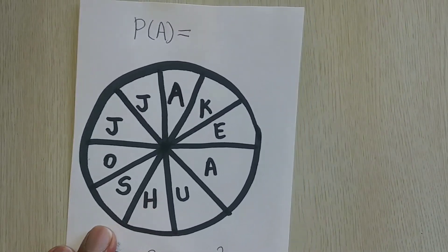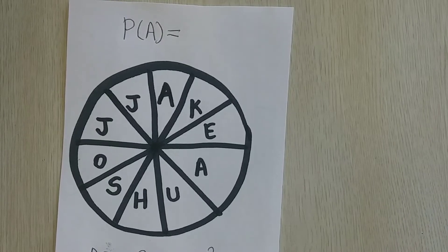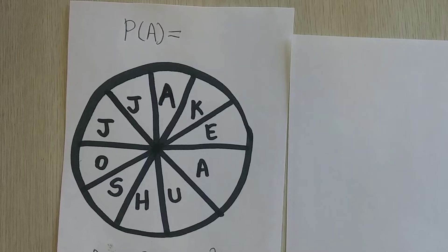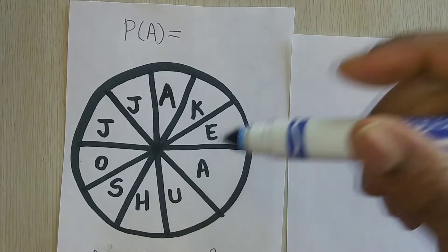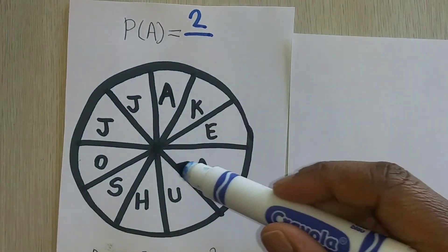What about this one? So with this one, I would like to know the probability of landing on the letter A. Well, how many letter A's do you see? Well, there's one here and there's one here. So there's two out of I need to find my total.